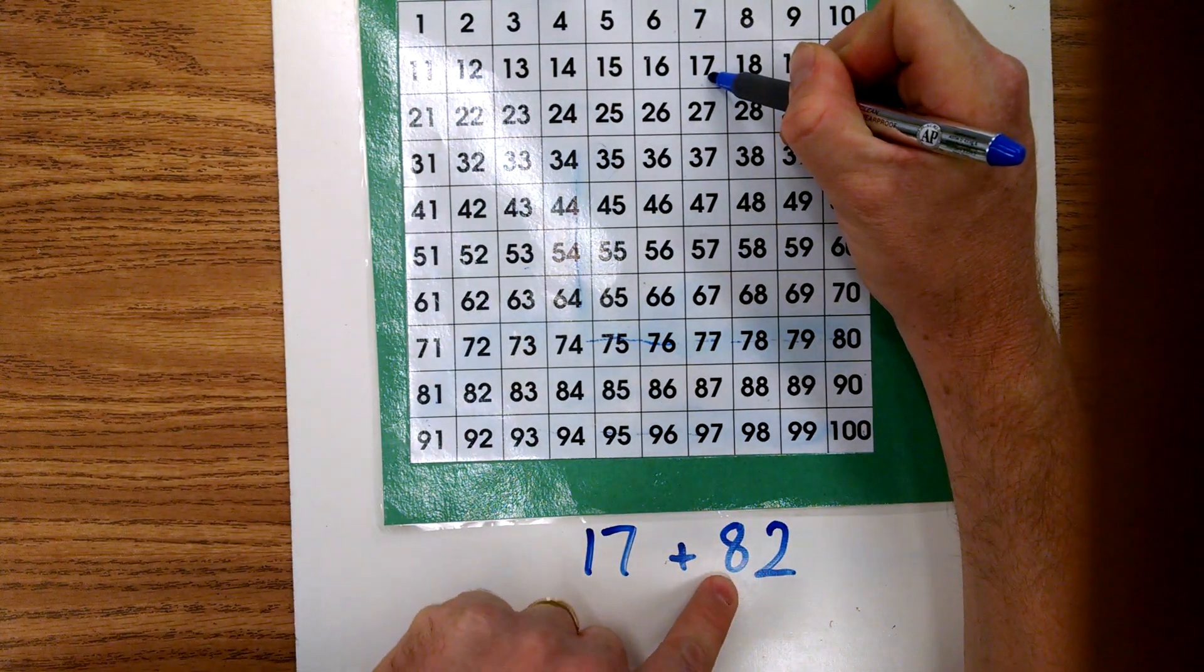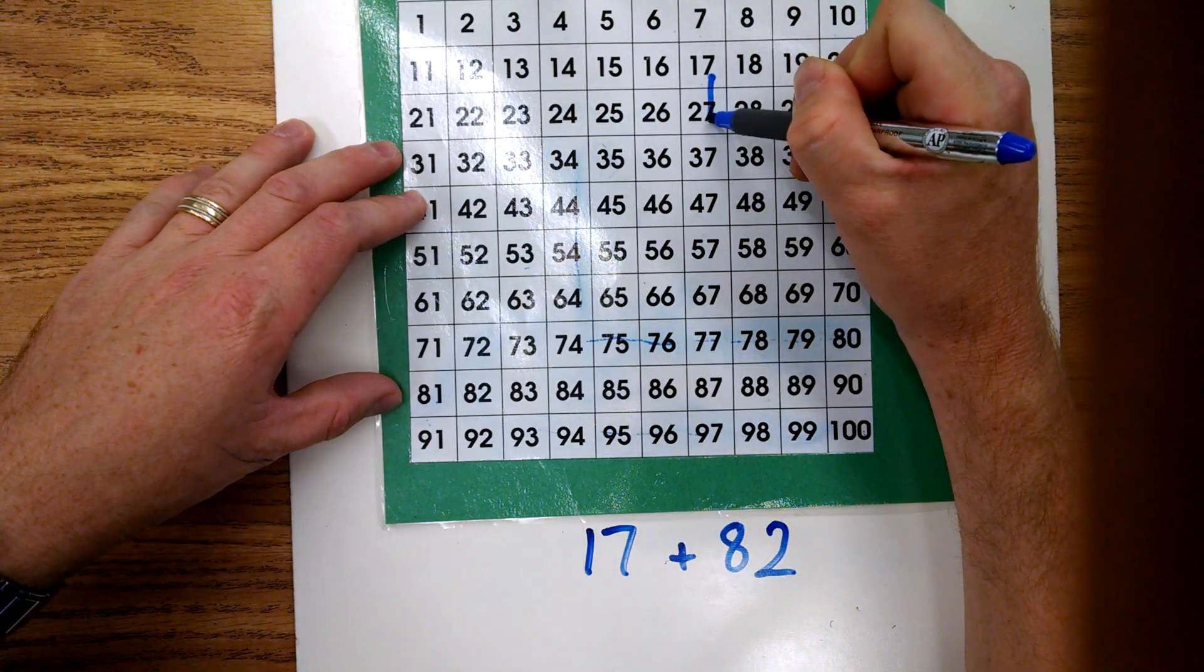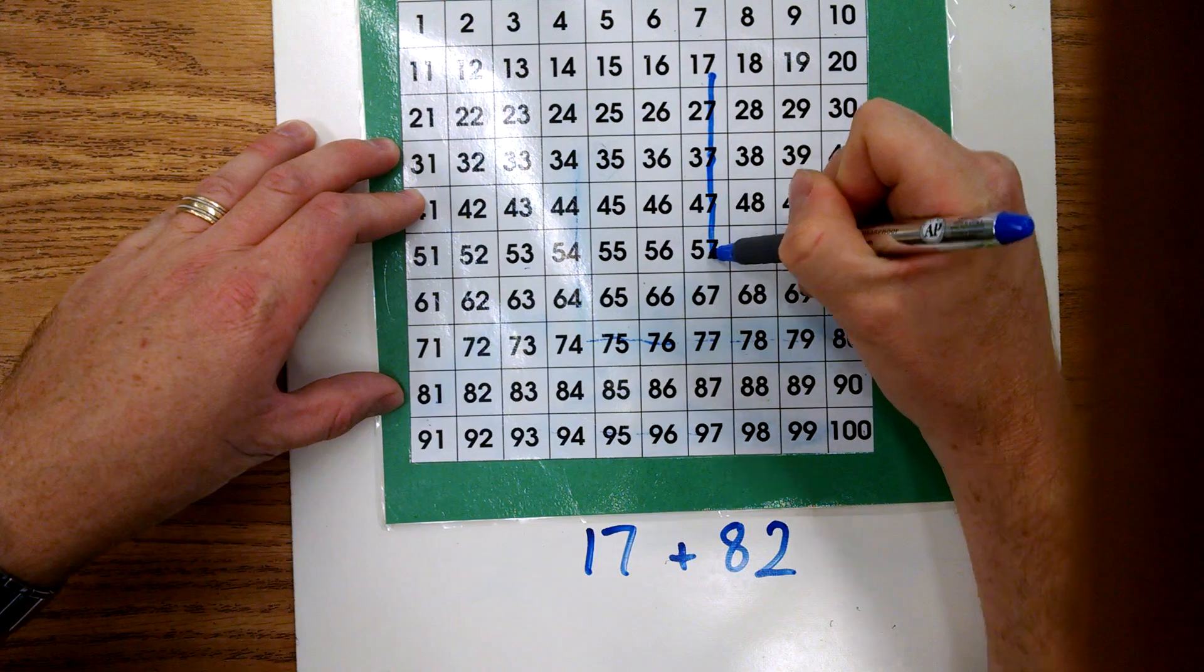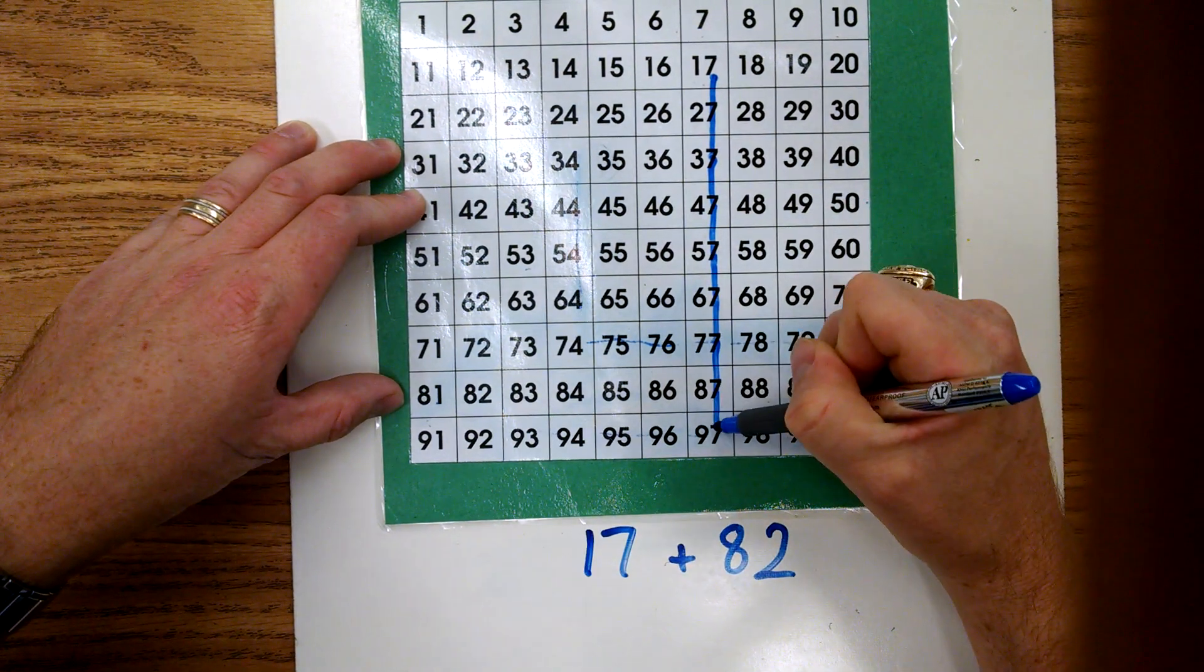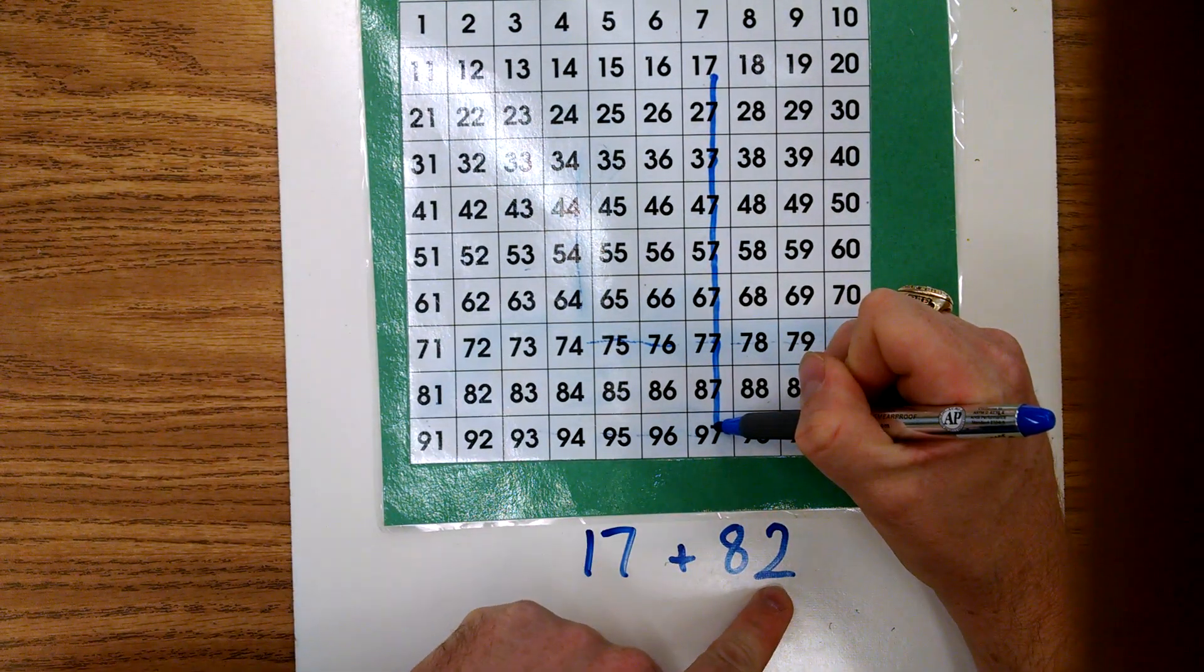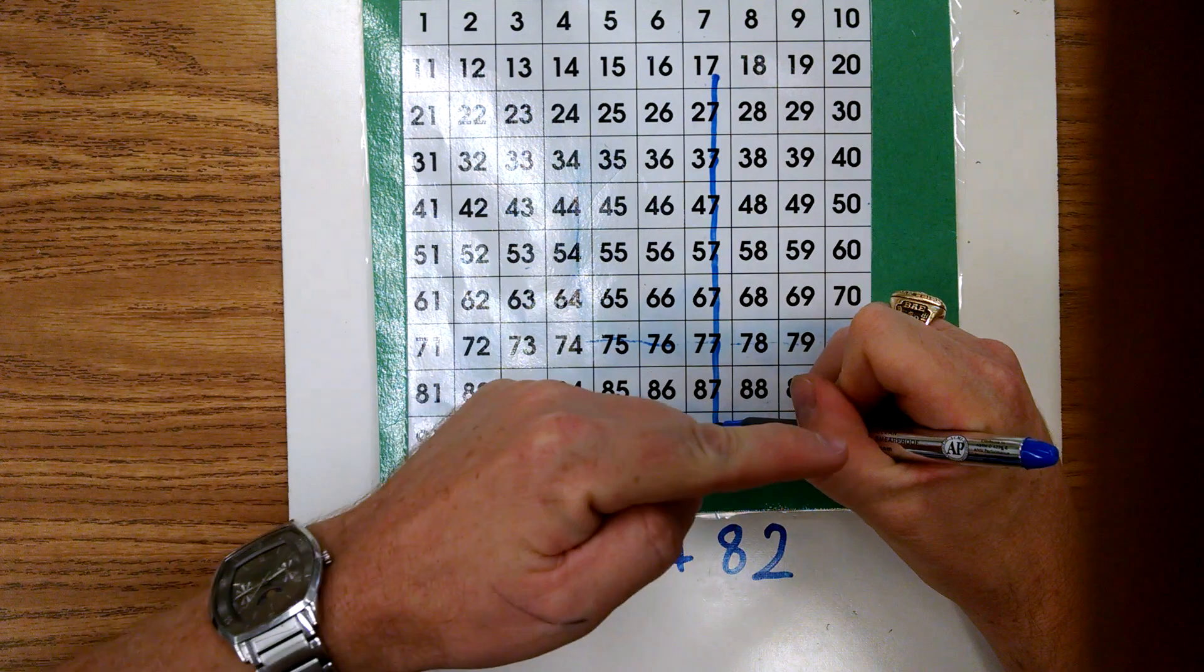We're going to go to 17. We're going to add our eight tens: 10, 20, 30, 40, 50, 60, 70, 80. And then we're going to add two ones, so we move that way for our ones: one, two. And our answer is 99.